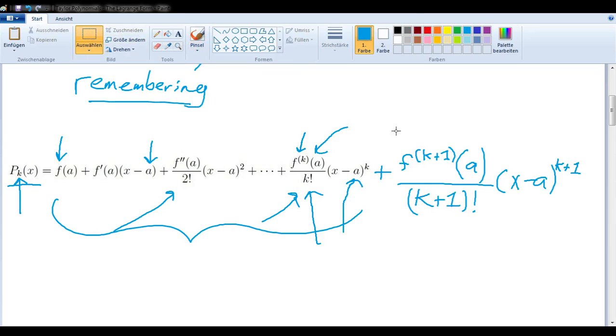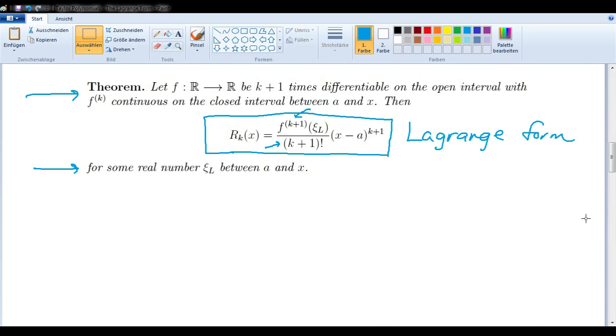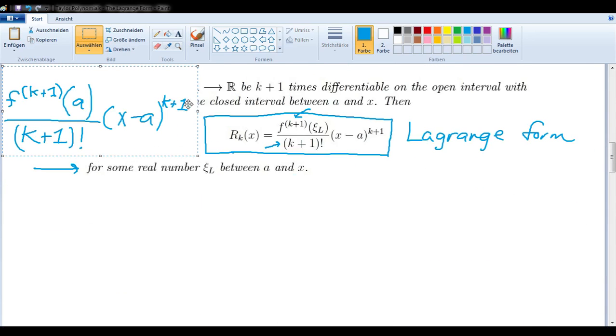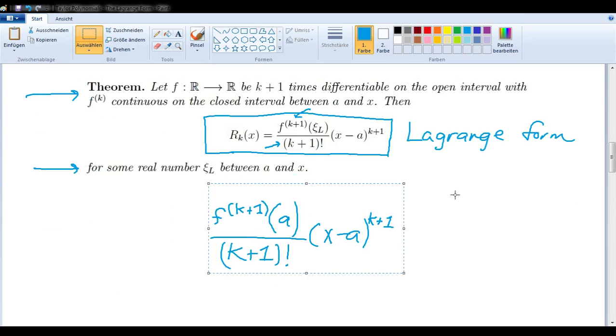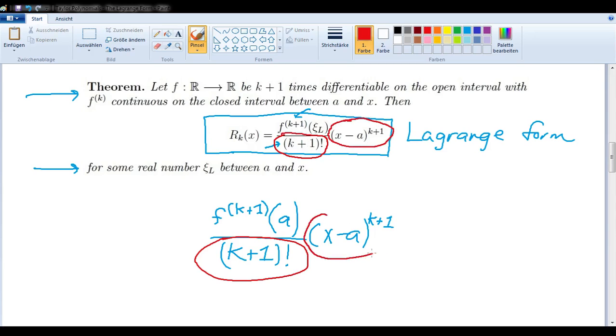Let's compare that with the Lagrange form of the remainder. We see here that they have quite a bit in common. Both of them divide by the k plus 1 factorial. Both of them multiply by x minus a to the k plus 1, and both of them use the k plus 1 derivative of f.